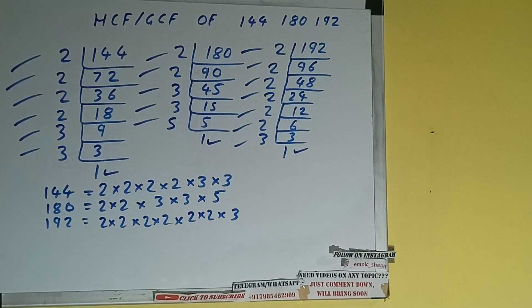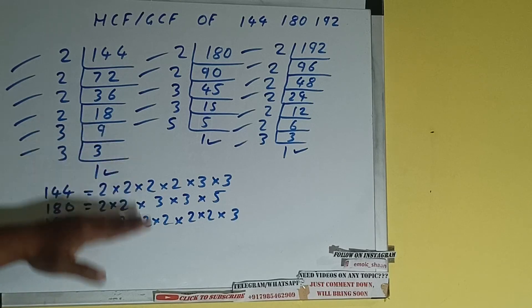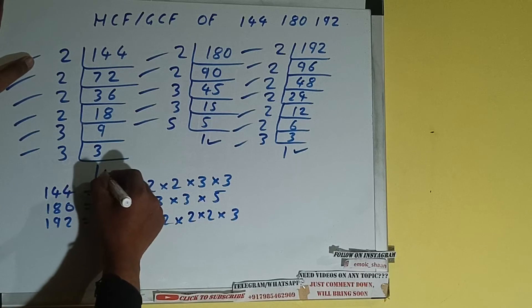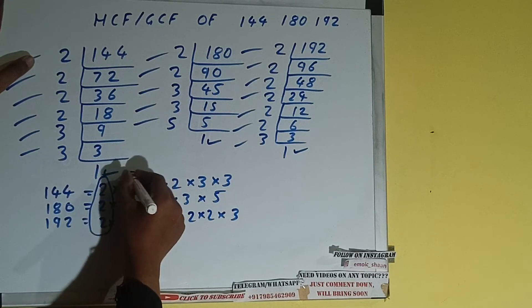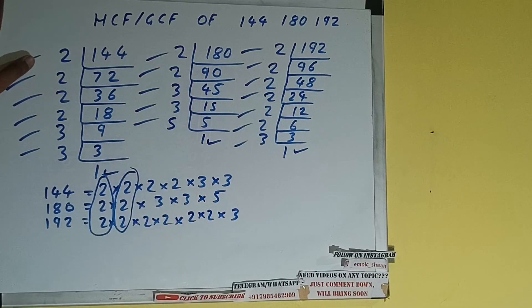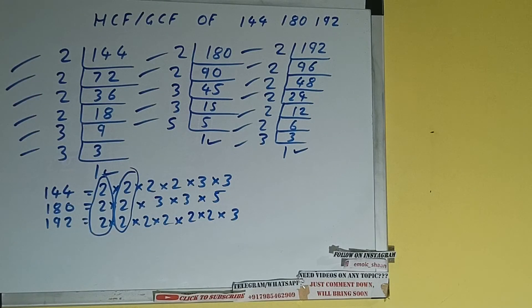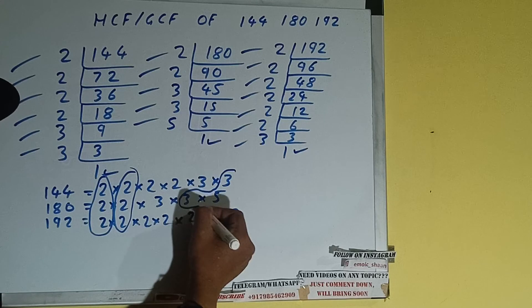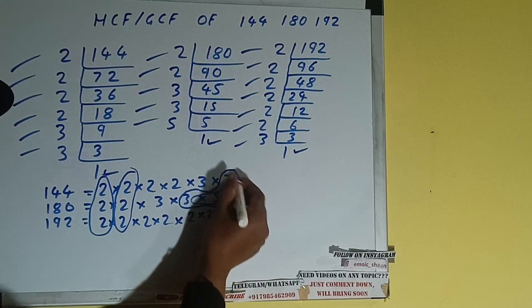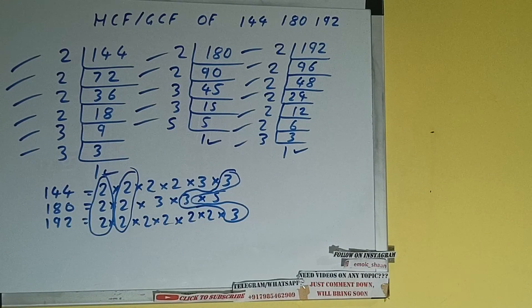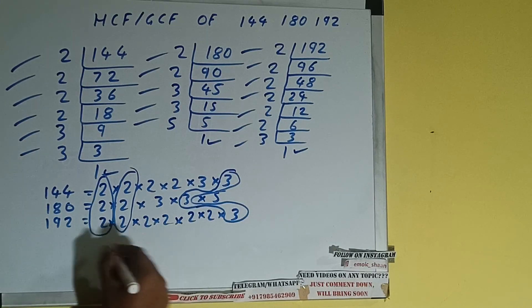Once you have correctly written all the prime factors of all the numbers, the next thing you need to do is circle out the prime factors which are common among all three numbers. So we'll see what the common ones are. We have one 2 in common, and another 2 in common. We have a 2 in 144 and 192 but not in 180 for the third 2, so we can't include it. We also have one 3 in common among all three.